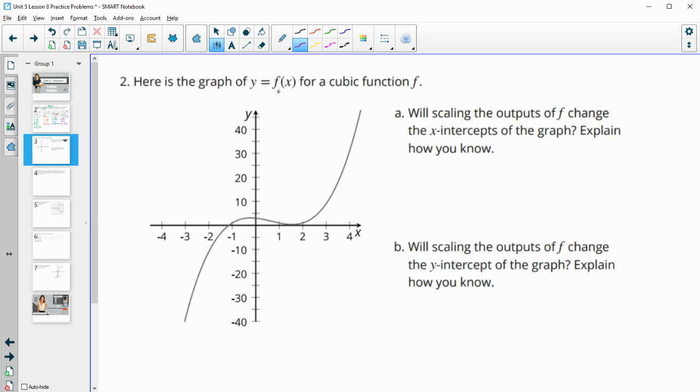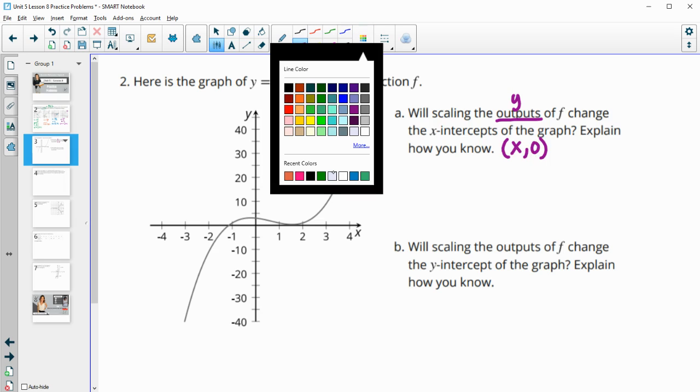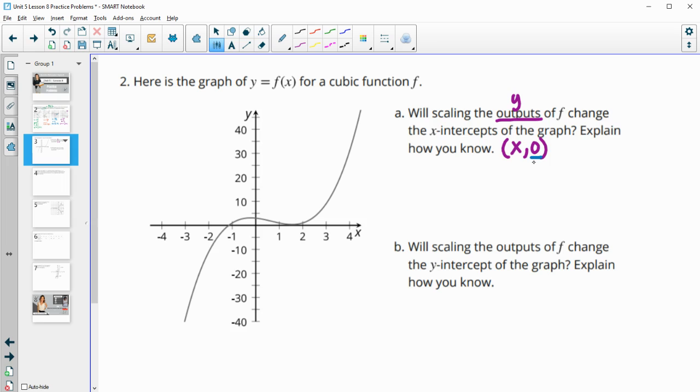Number two gives us the graph of f of x for a cubic function and asks will scaling the outputs or the y values change the x-intercepts on the graph and how do you know? The answer is no, because remember that an x-intercept has an x value and the y value is 0. If we multiply the outputs by something, you're only multiplying the y value times a number, and 0 times anything is 0.